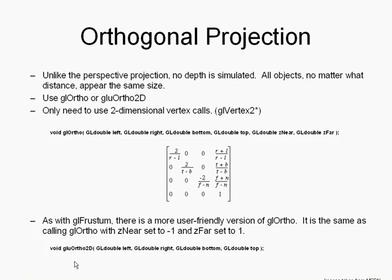GLU Ortho 2D is the same as GL Ortho except it passes negative one and one to Z near and Z far — that's just predefined. If you need more Z area, say you have a side-scroller with a character, a crate, and a backdrop — that's three different layers. Even in a 2D context, you still have a Z depth that allows you to stack objects on top of each other.